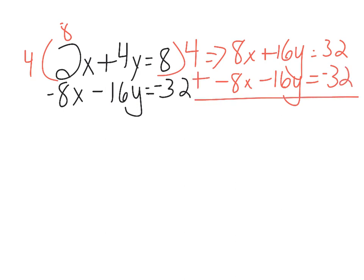And now I can add the equations together. Eight plus negative eight. Eliminated. Sixteen plus negative sixteen. Eliminated. So that entire side becomes zero. Thirty-two plus negative thirty-two. Zero.